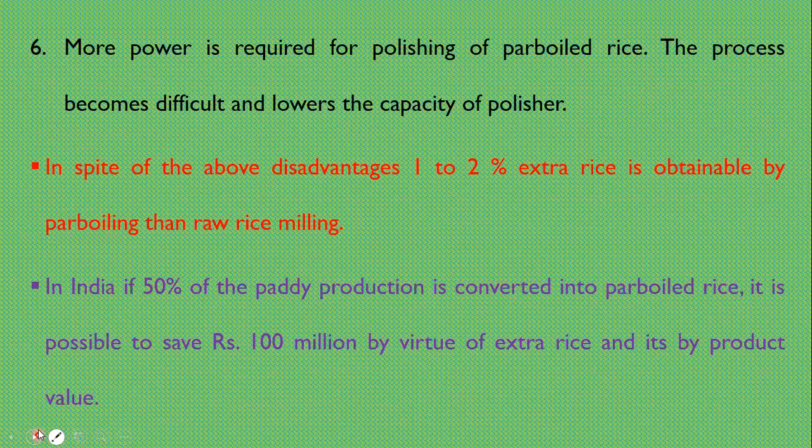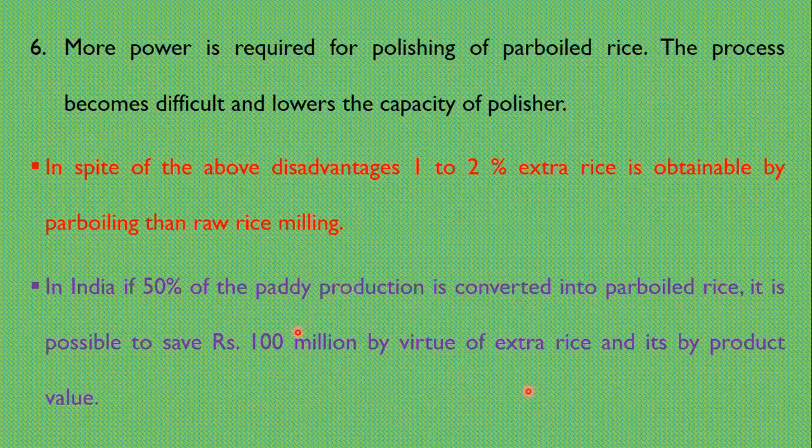In spite of the above disadvantages, 1 to 2% extra rice is obtainable by parboiling. In India, if 50% of the paddy production is converted into parboiled rice, it is possible to save approximately 100 million by virtue of extra rice and its product value.